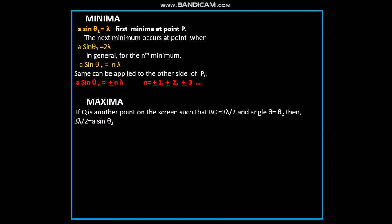Now let us see maxima. If Q is another point on the screen such that BC is 3 lambda by 2 and the angle theta is theta_2, then 3 lambda by 2 is equal to A sine theta_2. A sine theta_2 is 3 lambda by 2. This point will be the position of the first maximum.